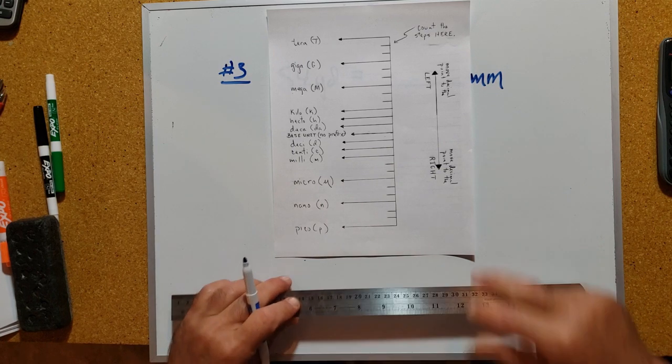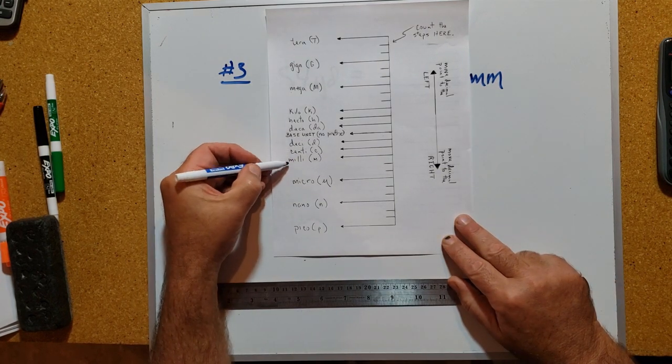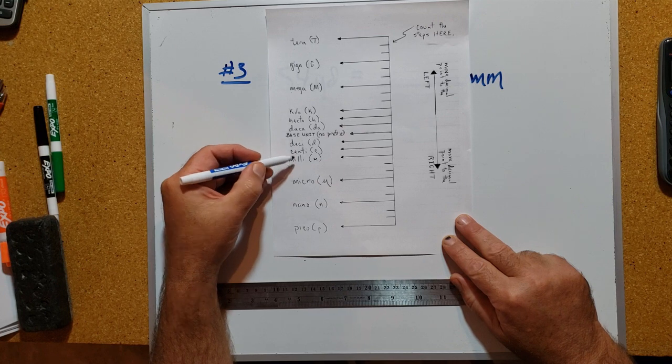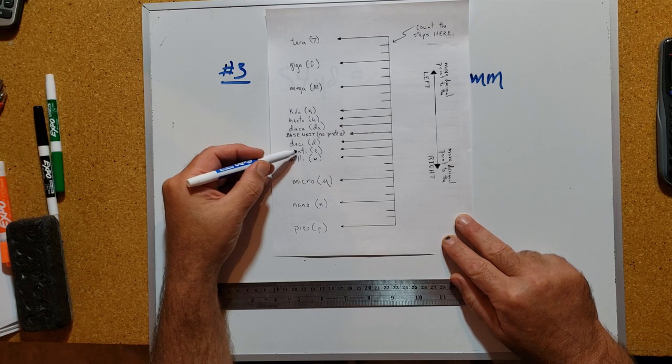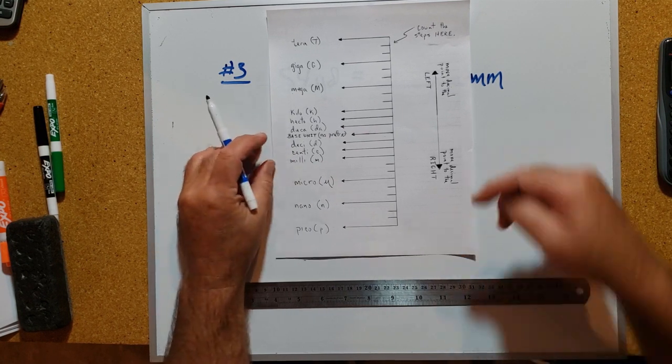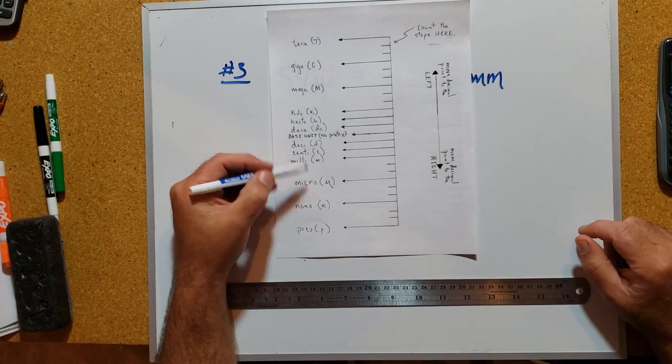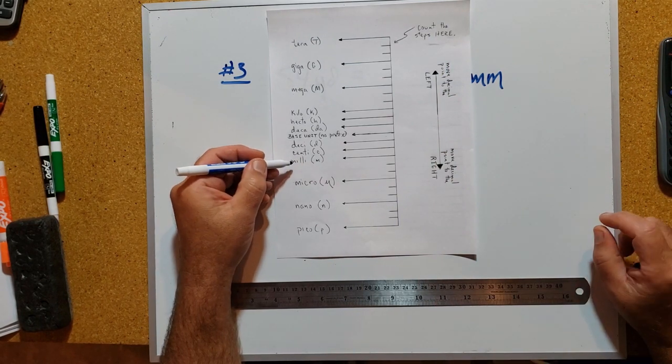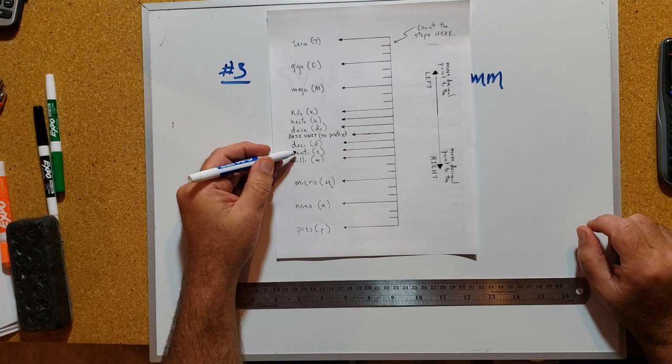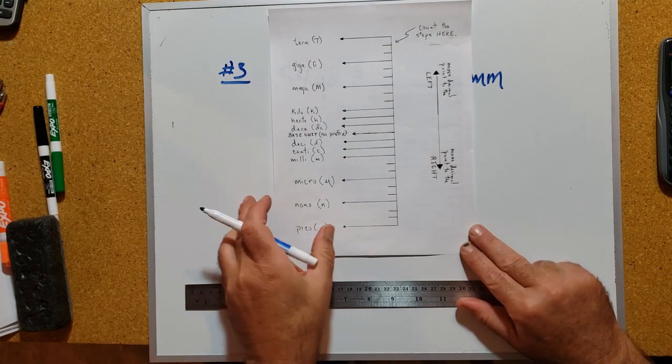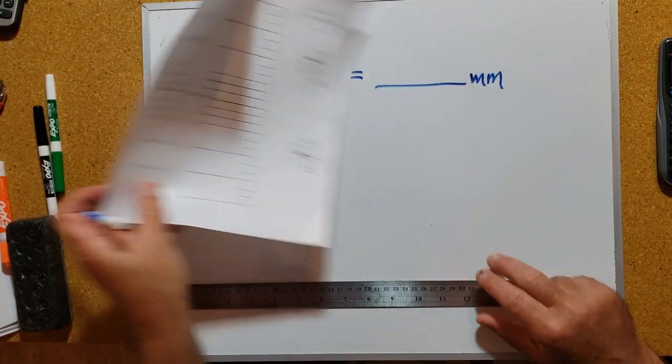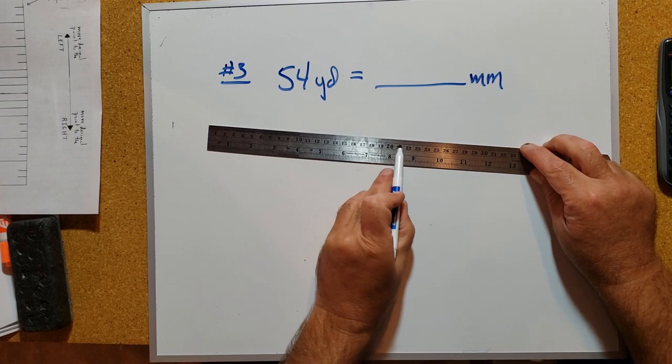If we take a look at our metric ladder from some time ago, centi and milli are one ladder rung apart, which means they differ by a factor of 10. Since we're going down to smaller units, a millimeter is 10 times smaller than a centimeter. We may want to remember that 10 millimeters - 10 of these small little lines - equals one centimeter.